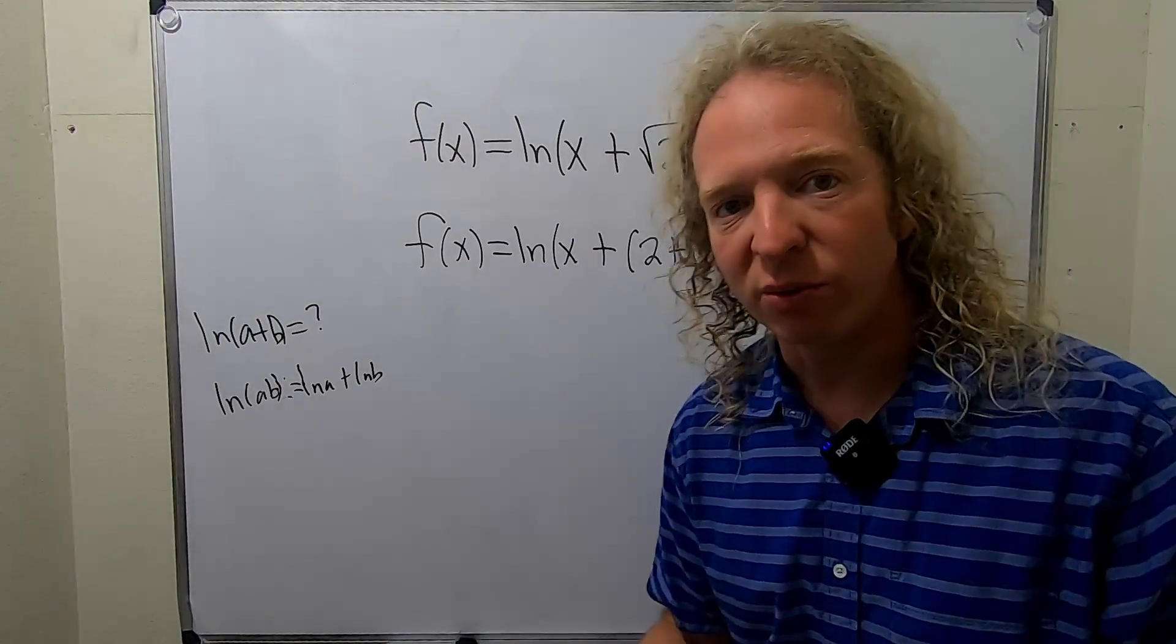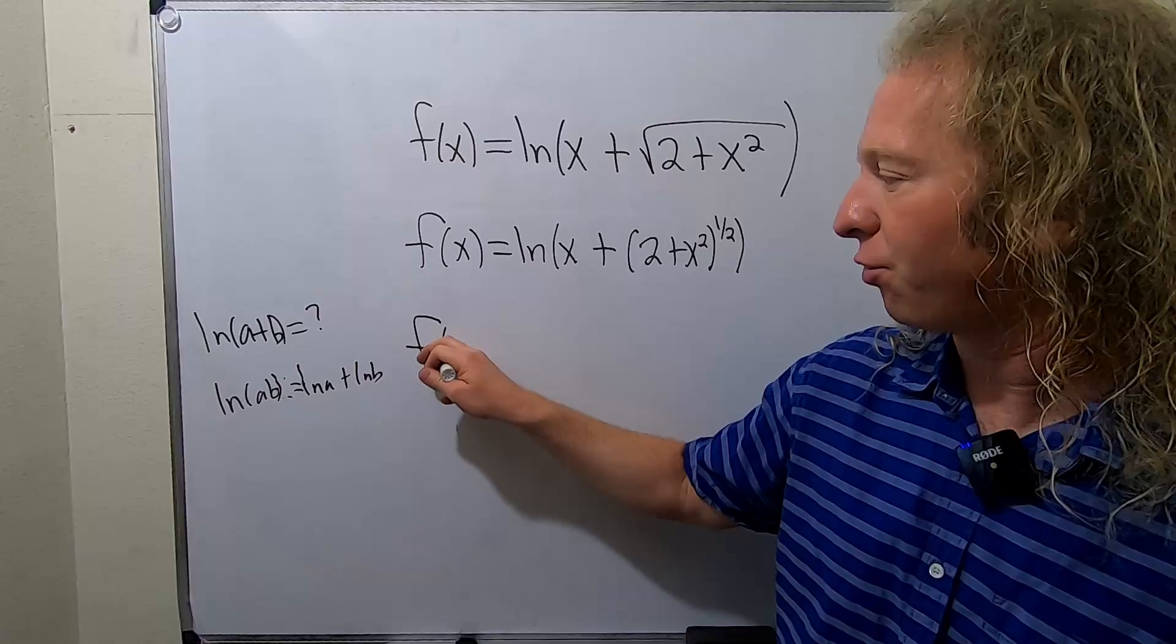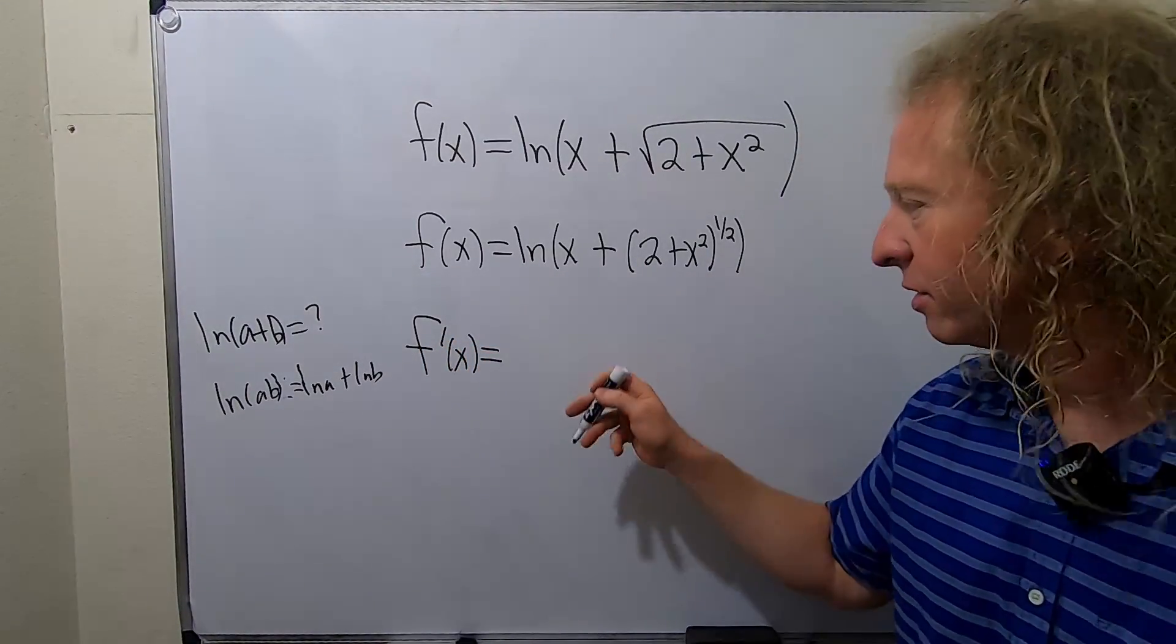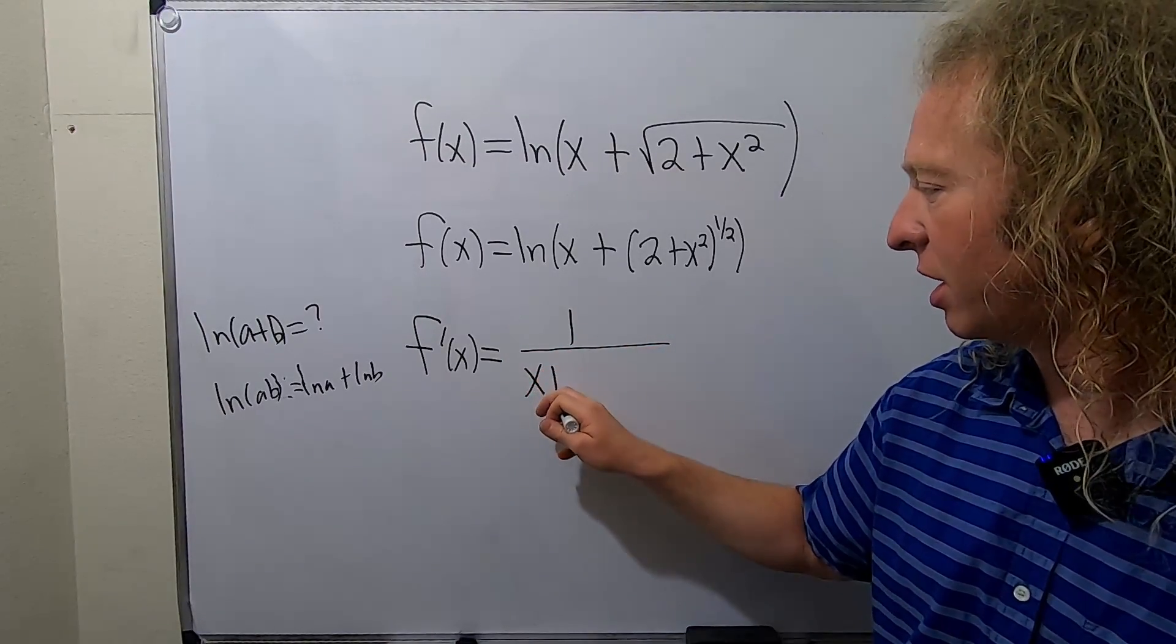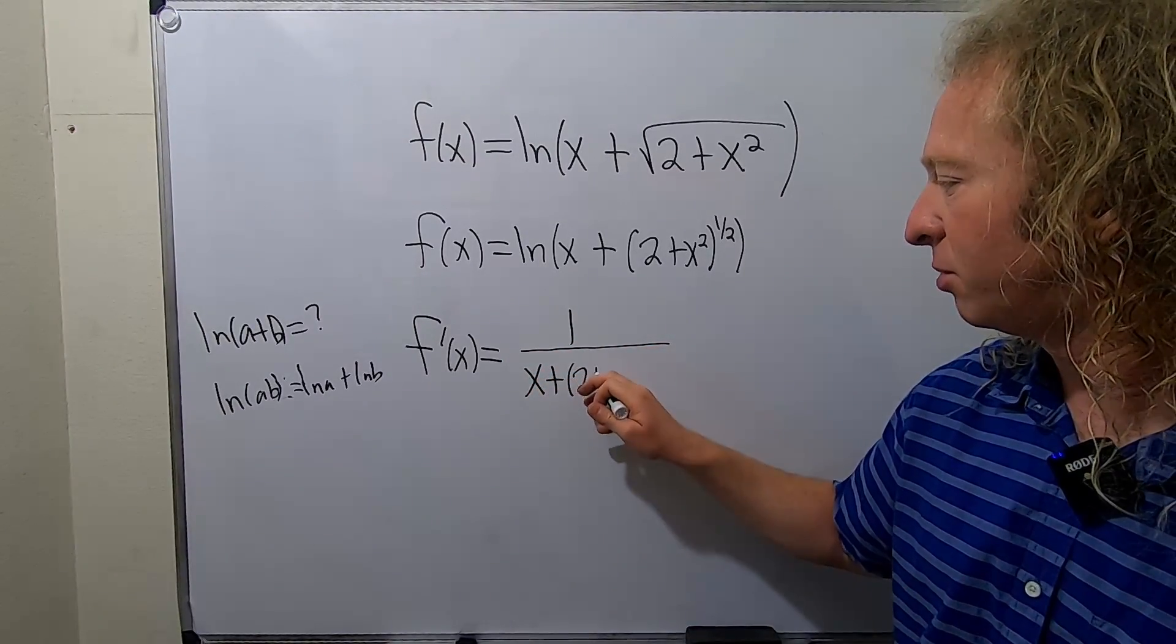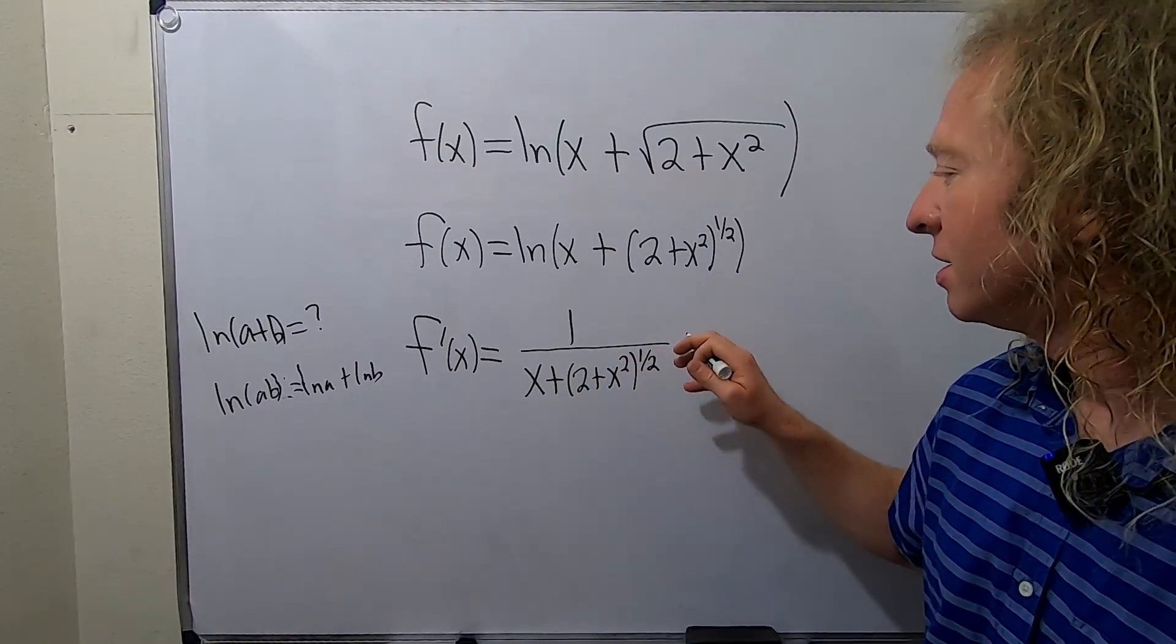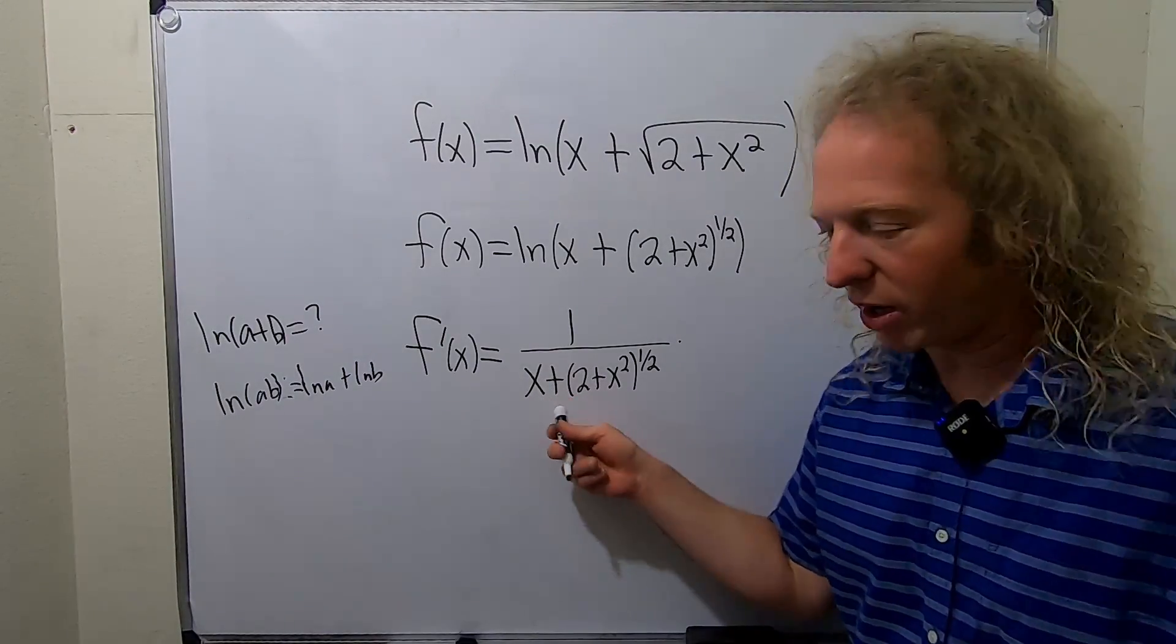Okay, so now we're just going to do it. We're going to carefully take this derivative. So f prime of x, this is equal to, it's 1 over all of this. So 1 over x plus (2 plus x squared) to the 1 half, times the derivative of the inside function. So the derivative of x is 1.